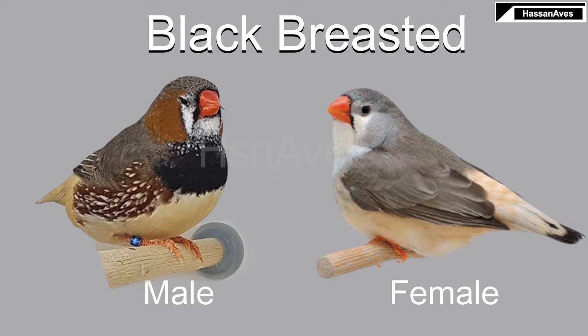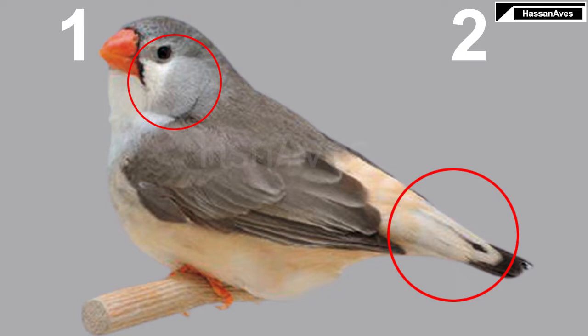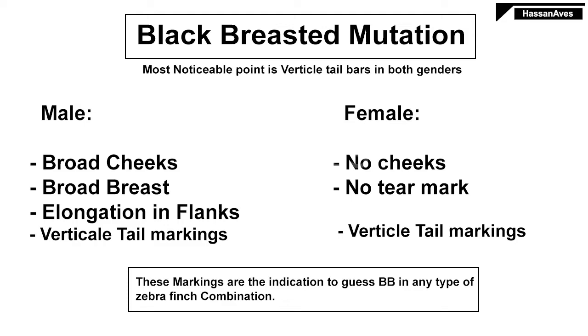Here you can see the black breasted mutation in both genders. In this mutation, you can identify a male by four noticeable markings. In the first picture you can see a broad cheek patch and broad breast. In the second picture you can see elongated flanks. In the third picture you can see vertical tail markings, which are the most noticeable point in both genders. In females, you can see they lack tear marks and their tail markings are the same as males. These markings are the sign of black breasted mutation presence.